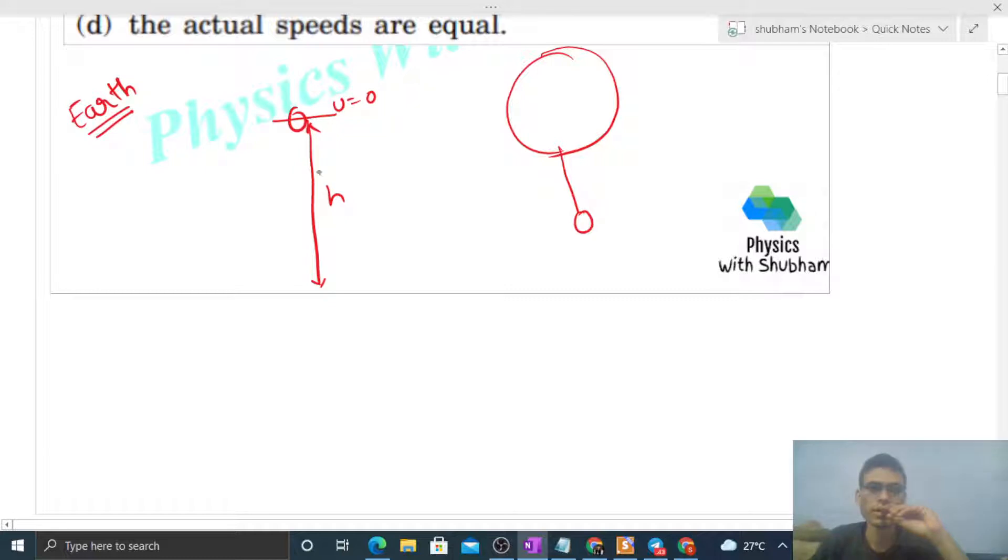Kaise find out karenge? s is equal to ut plus half of at square. s will be h, u is zero so ut will be zero. Half, what will be the acceleration during free fall? g, right, into t square. So time will be 2h by g, its root, right. Itna time lagega.